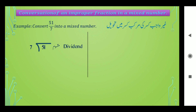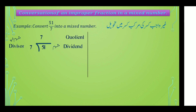51 is the dividend — جسے اردو میں مقصوم کہتے ہیں۔ 7 is the divisor — جسے مقصوم علیہ کہتے ہیں۔ جب ہم 7 سے 51 کو divide کریں گے تو 7 سے 49 ہوگا۔ 51 میں سے 49 minus کریں گے تو ہمیں 2 ملے گا۔